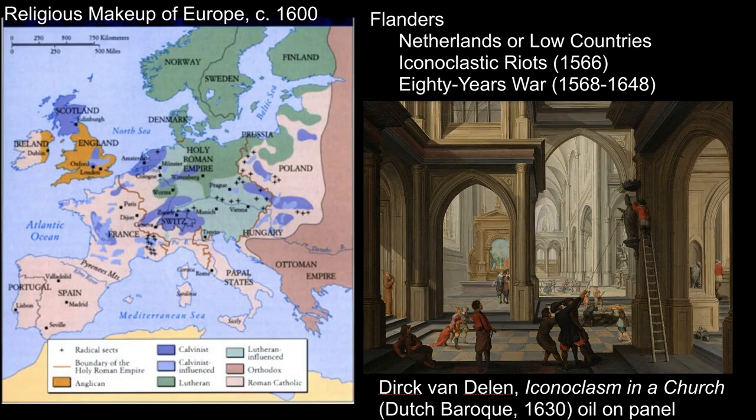Spanish artists soaked up the influence of Northern European art because Spain ruled the Low Countries — the areas of Belgium and the Netherlands today, which are here on this map. In 1555, Spain gets a new king, Philip II, when his father abdicates. Philip was not as magnanimous as his father, and he takes issue with a large population of Calvinists who by the 1550s lived in the Low Countries.